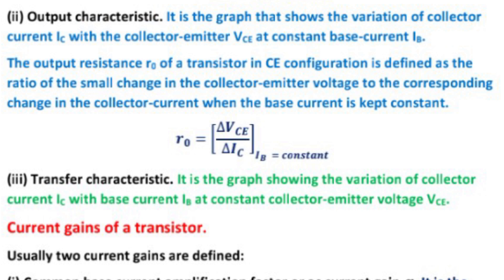Output characteristic: the graph showing the variation of collector current IC with the collector emitter voltage VCE at constant base current IB. The output resistance RO of a transistor in common emitter configuration is defined as the ratio of a small change in the collector emitter voltage to the corresponding change in the collector current when the base current is kept constant. RO equals delta VCE upon delta IC at constant base current.